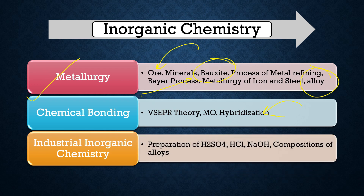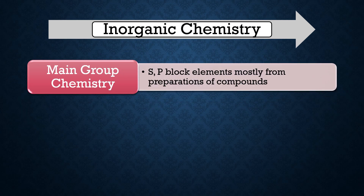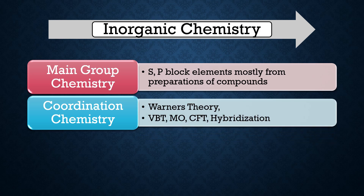Next is industrial inorganic chemistry. Here you have to learn about the preparation of mineral acids, composition of alloys, and preparation of sodium hydroxide, sulfuric acid, etc. In main group chemistry, you have to mostly read about s-block and p-block elements. The s-block has two blocks and p-block has six blocks. Mostly read about the preparation of compounds — for example, industrially important compounds using p-block elements like the carbon family or nitrogen family.